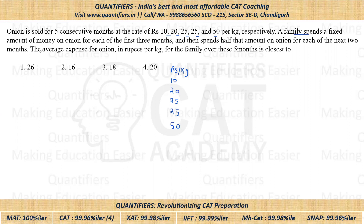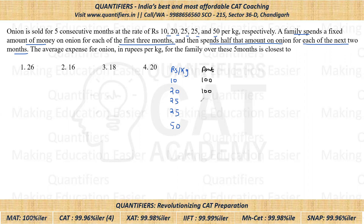It is given that a family spends a fixed amount of money for each of the first three months, and then spends half that amount on onion for each of the next two months. So let's assume the family spends 100 rupees each for the first three months — 100 for month one, 100 for month two, 100 for month three. For the next two months they will spend 50 rupees: 50 for the fourth month and 50 for the fifth month.